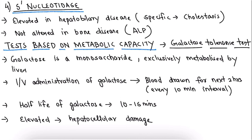The fourth serum enzyme is 5-nucleotidase. It is elevated in hepatobiliary disease, specifically cholestasis. Unlike ALP, it is not altered in bone disease. Because ALP is found in both liver and bone, elevated ALP cannot confirm whether the problem is in bone or liver. But if 5-nucleotidase is elevated, we can confirm that there is a problem with the liver.